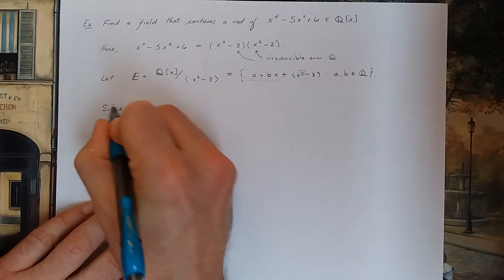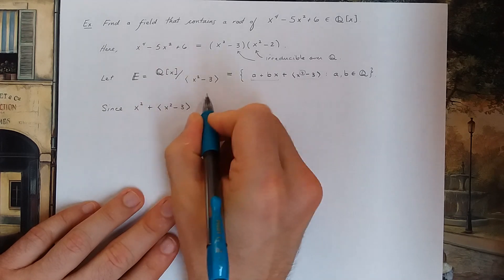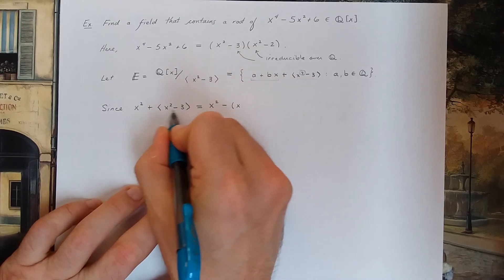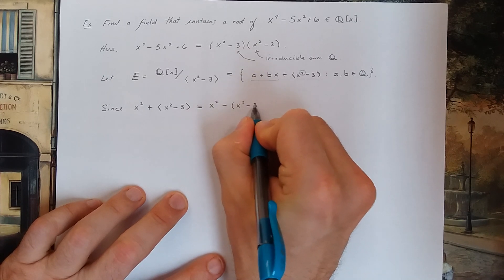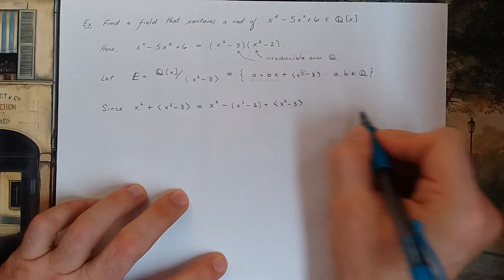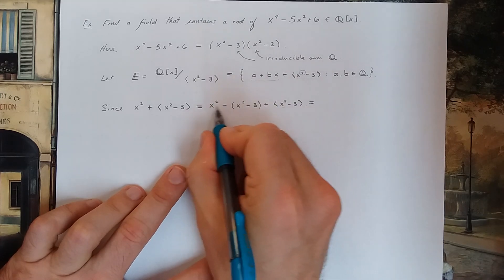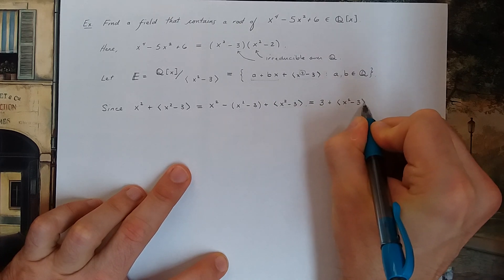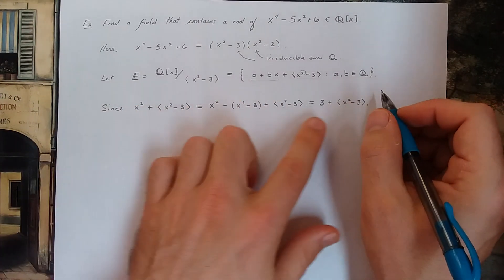Now, since x squared plus my ideal is the same as x squared minus 0 and 0 in my field is the same as x squared minus 3... x squared minus 3 is definitely in the ideal generated by x squared minus 3. So this is like a 0 in my ring. So I can subtract it. If you do the coset operation you get 3 plus x squared minus 3, the ideal. So what this is saying is that whenever I have an x squared, I could replace it with a 3.